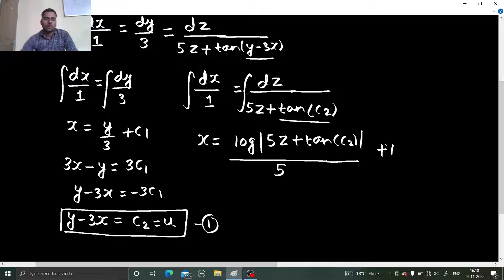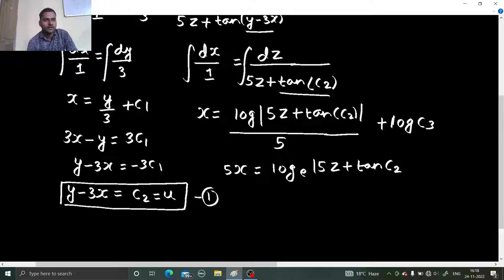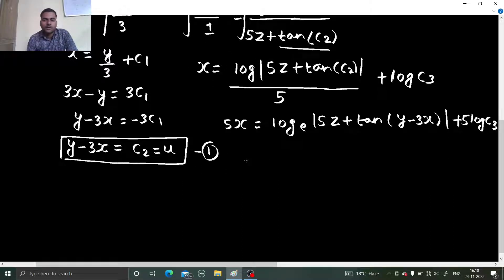So what should I do with that constant? Let us write that as log of c3 because c1, c2 I have already used. So 5x equals to log base e 5z plus tan c2, or c2 also now I can replace this as y minus 3x because that's what we already found. Plus log c3.